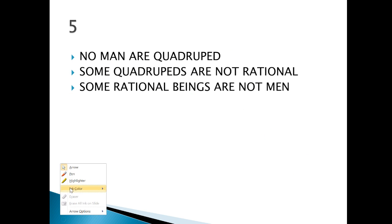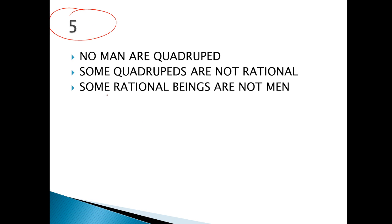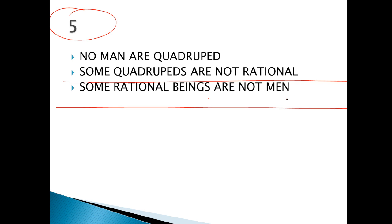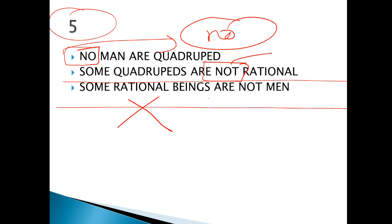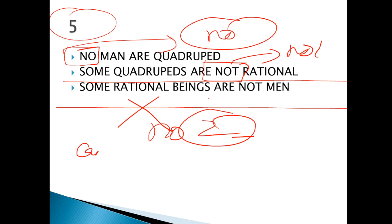So I hope guys you are clear. Moving to the fifth question: 'No men are quadruped, some quadruped are not rational, some rational beings are not men.' Now in this, the first thing to check is whether there are two negatives. Yes — there are two negatives here. Two negatives can never draw a conclusion. The first statement has 'no,' the second also has 'not.' So no two negatives can draw any conclusion — that's why this is also wrong.